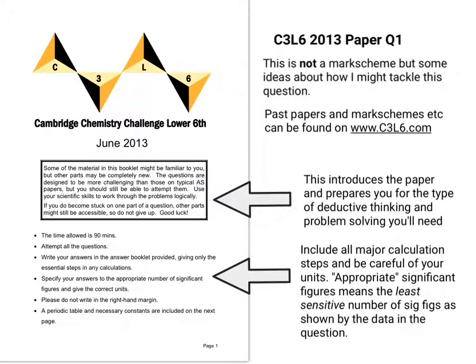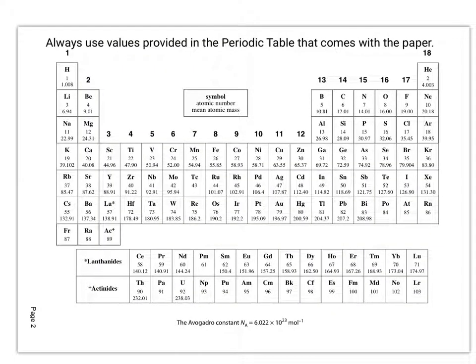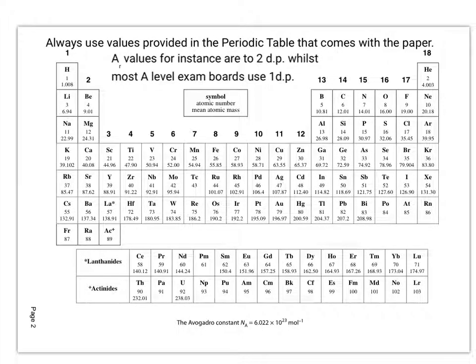Further down the page, they talk about how to lay out the calculations and how to use good mathematical common sense. So appropriate significant figures means the least sensitive number of sig figs as you find in the question. And always be careful of your units. Another good tip is to always use the values that are provided in the periodic table that comes with the paper. So if you look at the values for relative atomic mass in this particular periodic table, they're to two decimal places, whilst most A-level exam boards use one decimal place in their data sheets. So stick to the values that are in this particular periodic table when you're doing your calculations.